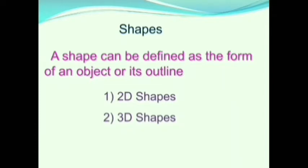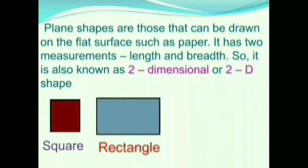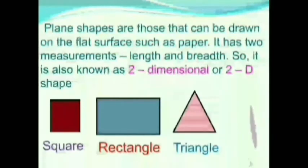They are 2D shapes and 3D shapes. There are a number of shapes all around us. Plain shapes are those that can be drawn on a flat surface, such as paper. They have 2 measurements — length and breadth — so they are also known as 2D shapes. The 4 basic shapes are Square, Rectangle, Triangle, and Circle.